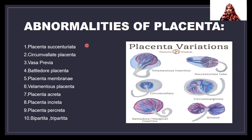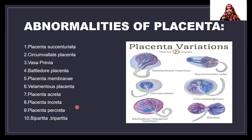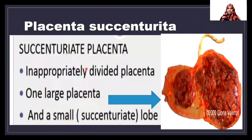Now we will see briefly the abnormalities of placenta. The selected abnormalities are: placenta succenturiata, circumvallate placenta, vasa previa, battledore placenta, membranous placenta, velamentous placenta, and placenta accreta, increta, and percreta — which are separated by the depth of insertion — as well as bipartite and tripartite placenta.